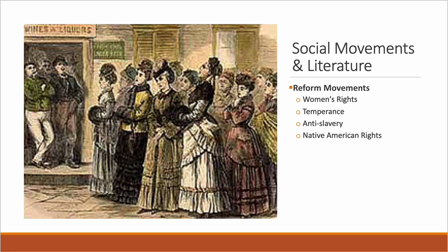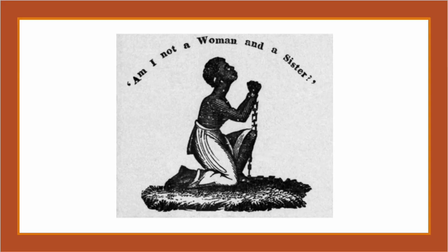In addition to periodical culture, social movements of the time influenced the literature produced — including women's rights, temperance, anti-slavery, and Native American rights movements. Reform movements were an integral part of antebellum culture, and many American writers were sympathetic to or wholly supportive of them. Just as debates over slavery would define politics in the antebellum period and ultimately cause the Civil War, slavery also profoundly influenced the literature: from Emerson and Thoreau's essays on John Brown to slave narratives by Frederick Douglass, William Wells Brown, and Harriet Jacobs, to images of slavery in Whitman's poetry.